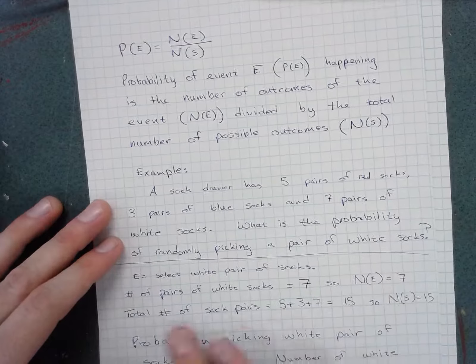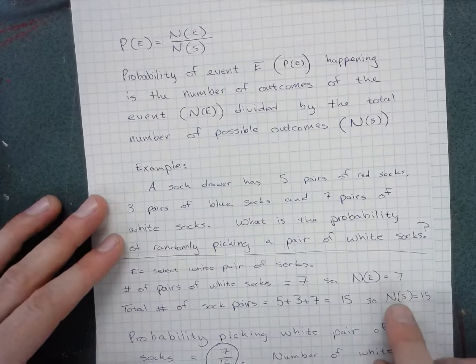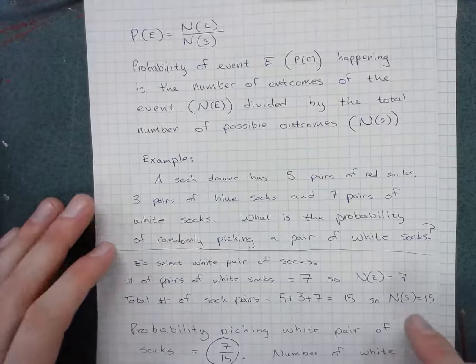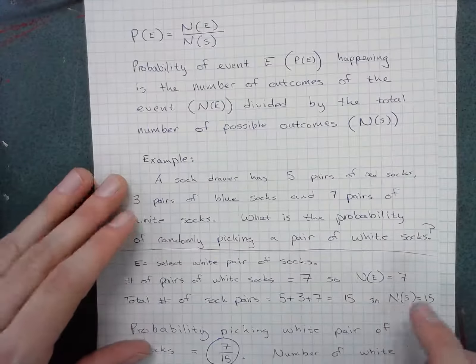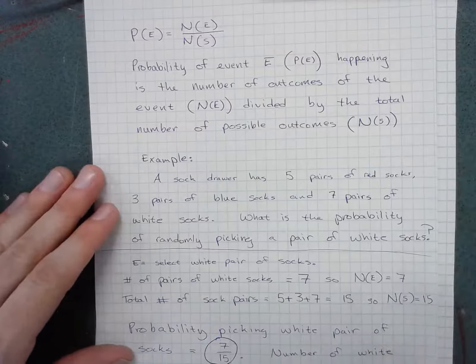In the denominator, we're going to put the number of events in the sample space, which is just a fancy way of saying the total list of everything possible.